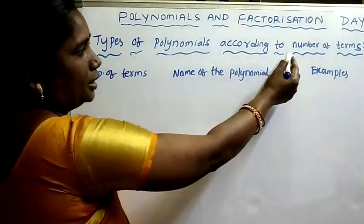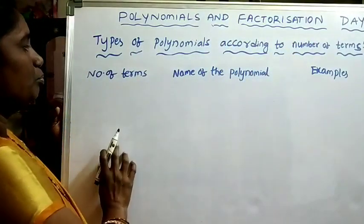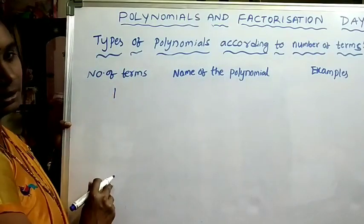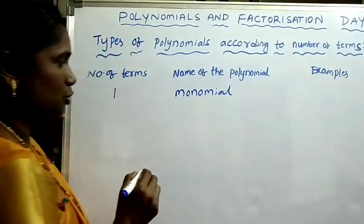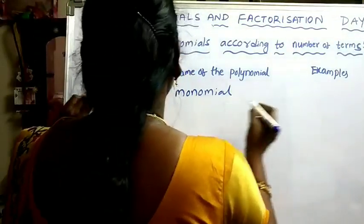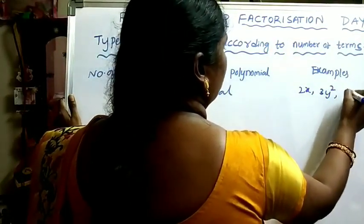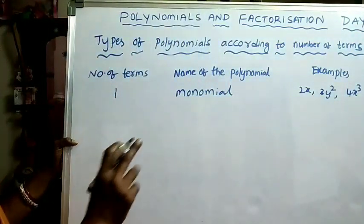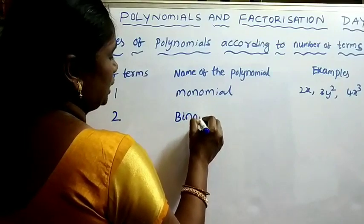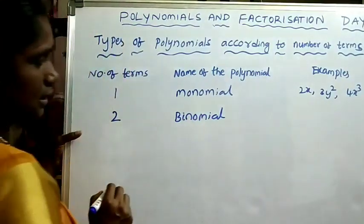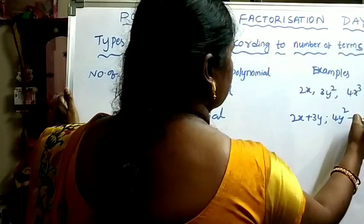Types of polynomials according to number of terms. Based on the number of terms, we classify polynomials. If the number of terms is 1, the polynomial is called a monomial — for example, 2x, 2y, 3y², 4x³. Only one term. If the number of terms is 2, it is called a binomial — for example, 2x plus 3y, 4y² minus 7, etc.